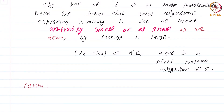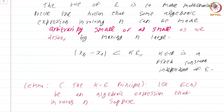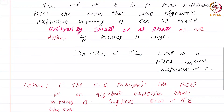This is called the k-epsilon principle. Let E of n be an algebraic expression that involves n — equivalently, you can say E is a function from the natural numbers to the real numbers. Suppose E of n is less than k·epsilon whenever n is sufficiently large. This is an opportunity to see our new enhanced vocabulary in action: 'when n is sufficiently large.'